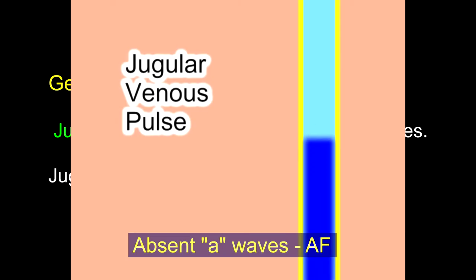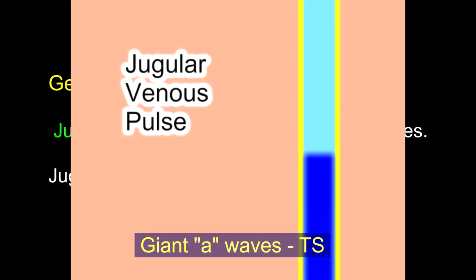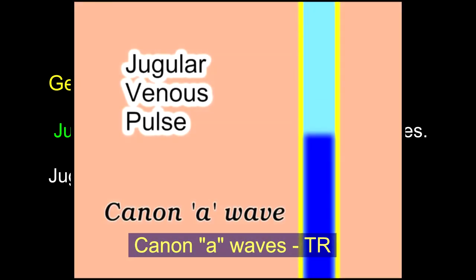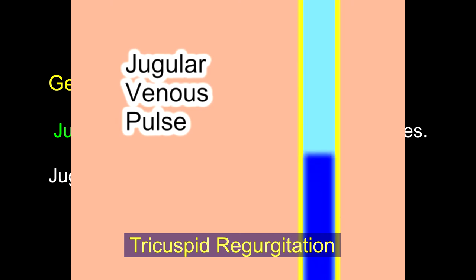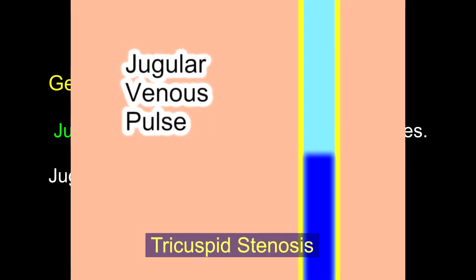The A waves are normally the most prominently seen. A waves are absent in atrial fibrillation where there is no effective atrial contraction. Giant A waves are seen in tricuspid stenosis, pulmonary stenosis, and pulmonary hypertension. Very large or cannon A waves are seen intermittently in complete heart block and ventricular tachycardias whenever the right atrium and right ventricle contract simultaneously. In tricuspid regurgitation, the X descent is obliterated and may be replaced by a giant V wave, with a more prominent Y descent. In tricuspid stenosis, there are large A waves and a small Y descent.